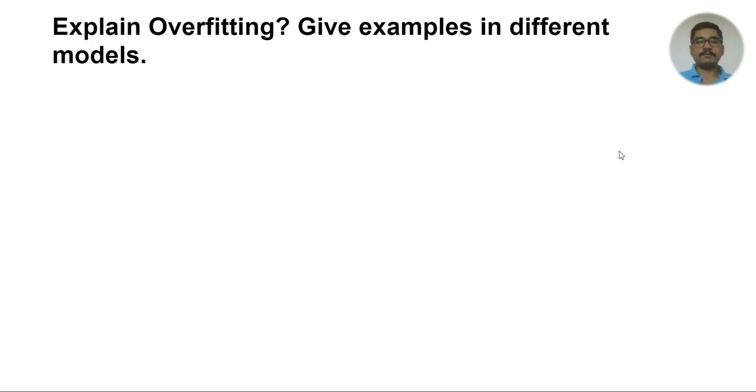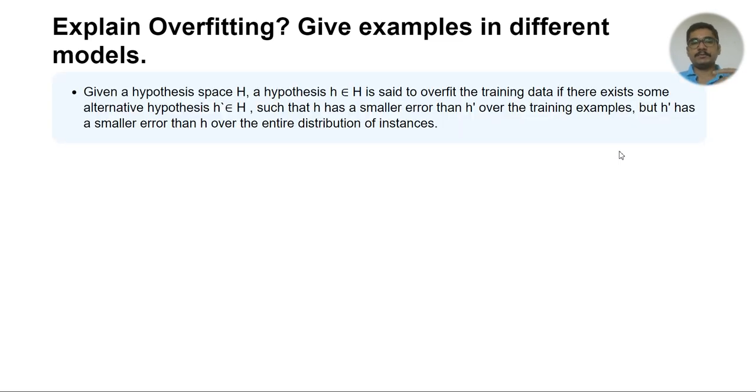What you should say is: given a hypothesis space H, a hypothesis h from this hypothesis space is said to overfit the training data if there exists some alternative hypothesis h prime, and if h has a smaller error than h prime over the entire training samples, but h prime has a smaller error than h over the entire distribution of instances.